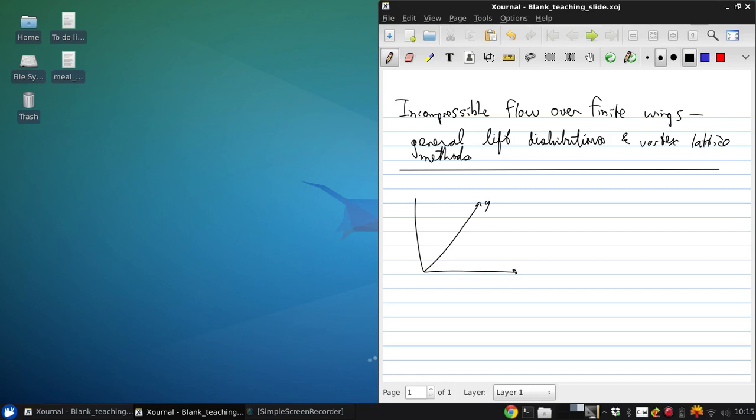We have coordinate system where our lifting line goes here along our y-axis. Then, if we let y minus b over 2 of theta—remember, b is the wingspan—then what we get is that since y varies between negative b over 2 and b over 2 over the wing, that corresponds to theta varying between 0 and pi.